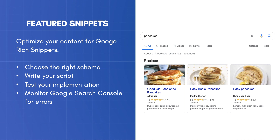In summary, the steps are: Step 1 — Choose the right schema. There are a number of Google-supported schemas covering a range of content types, including articles, recipes, reviews, local businesses, and many more.